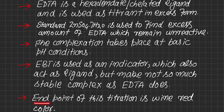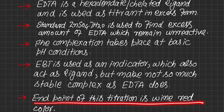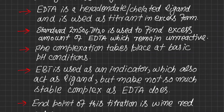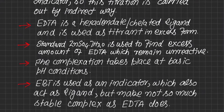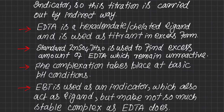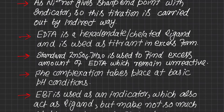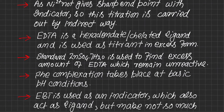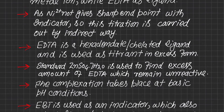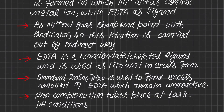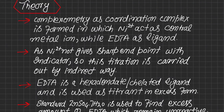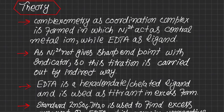In this particular titration the endpoint is reversed, which is wine red color. Why does this wine red color appear? Why are we adding EDTA in excess form? And why are we adding zinc sulfate to find the excess amount of EDTA? All these questions will be answered in the lecture.